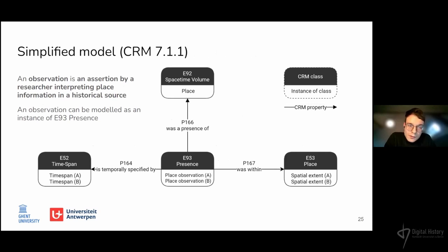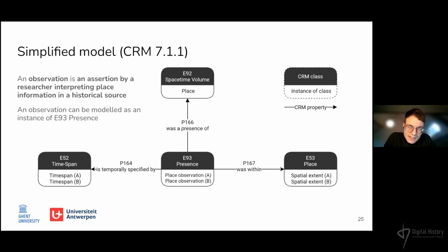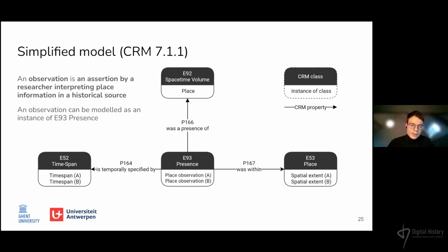The model for the gazetteer I built is centered around the class E92 Space-Time Volume and its subclass E93 Presence. A place can be defined as an instance of the Space-Time Volume class. Within the ontology, Space-Time Volume has several associated properties and classes that can be used to model the extent of a place throughout history. In the urban gazetteer, place information is based on observations — an assertion made by a researcher interpreting information about a place as available in a historical source. The observation can be modeled as an instance of the class E93 Presence, defined in this context as the spatial extent of a place at a fixed point in time.